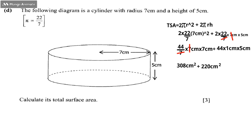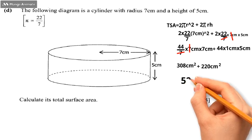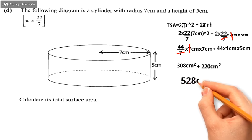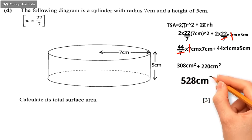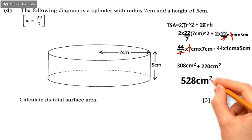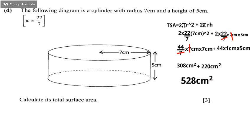Adding the two products: 308 centimeters squared plus 220 centimeters squared gives us 528 centimeters squared. So 528 centimeters squared is the total surface area of the cylinder. That is the answer.